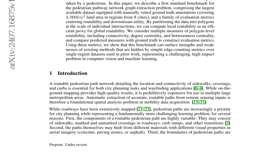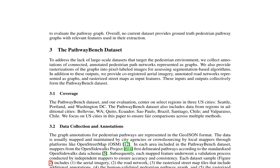The dataset includes regions from three cities, featuring co-registered aerial imagery, road networks, and human-validated pedestrian pathways. The evaluation procedure emphasizes graph connectivity and introduces a new metric of local traversability as an efficient proxy for global graph routability, focusing on the traveler experience.